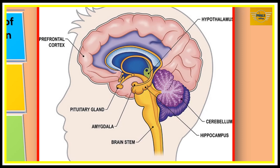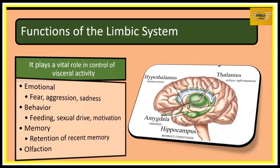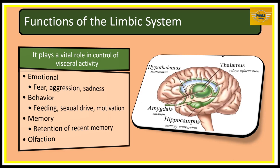This system was formally called the rhinencephalon because it was thought to be only associated with olfaction, but recent studies have shown that it does a lot more. Generally, the limbic system plays a role in the emotions of the individual such as fear, aggression, and sadness. It also modulates behaviors such as feeding behavior, sexual drive, and motivation. The system also has a lot to do with memory — retention of recent memory in particular — and also olfaction.